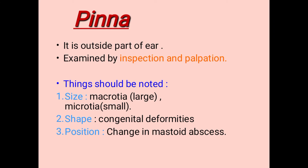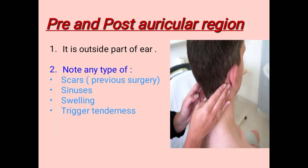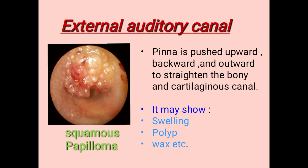In cases of mastoid absence, the position of the pinna changes. The pre- and post-auricular region is the area around the pinna, also examined by inspection and palpation. During examination we should note any type of scar, sinuses, swelling, previous surgery scar, and trigger tenderness.